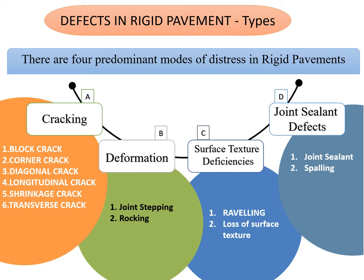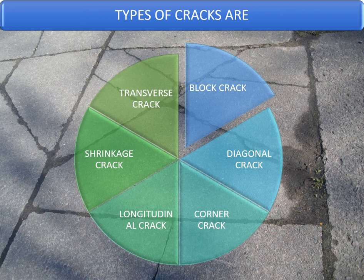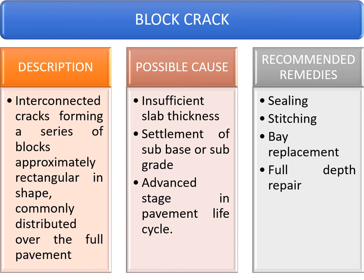For each crack type, we will cover three basic steps: the description of the crack, the possible causes of the crack, and the remedial actions one can take. We will start with block cracks first, then slowly cover diagonal cracks, corner cracks, longitudinal cracks, shrinkage cracks, and transverse cracks generally seen in rigid pavement or pavement quality concrete.